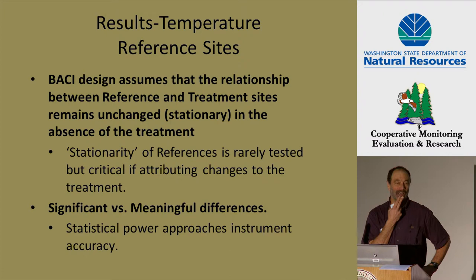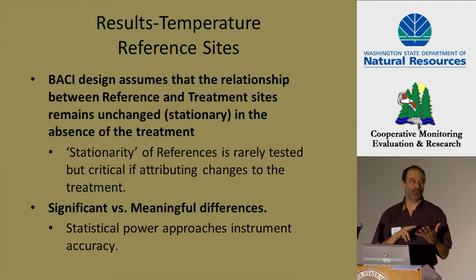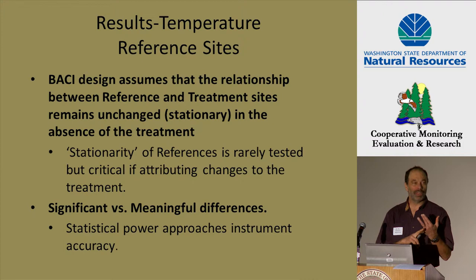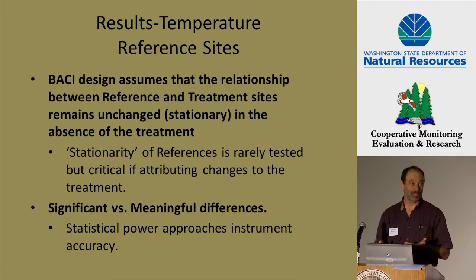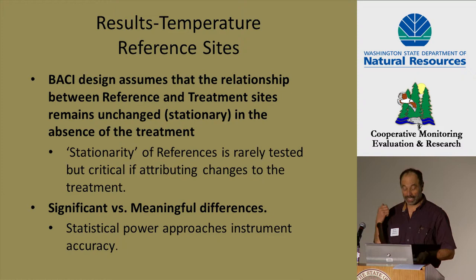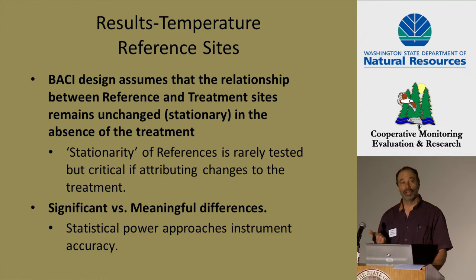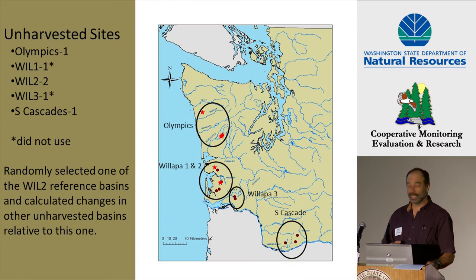One thing this study has that is valuable is its BACI design with multiple reference basins. One fatal flaw in some BACI designs is a poor reference — if your reference or control basin is poor, the design falls apart. Having multiple unharvested basins gave us an opportunity to look at reference-to-reference differences. A poor reference can manifest as a weak correlation between reference and treatment, or as the reference drifting off on its own track over time, making it look like the treatment is changing when it isn't. This gave us the ability to assess stationarity — are references stable with respect to each other and with respect to treatment basins?